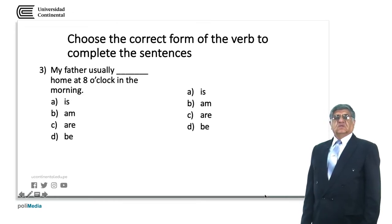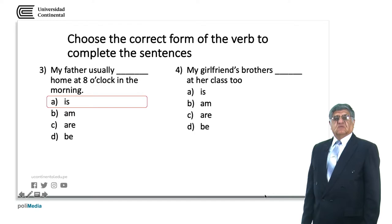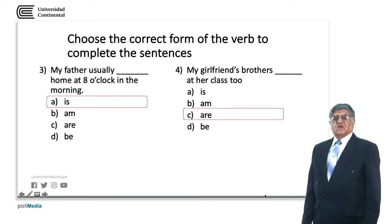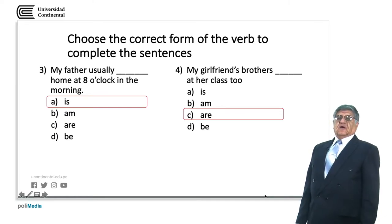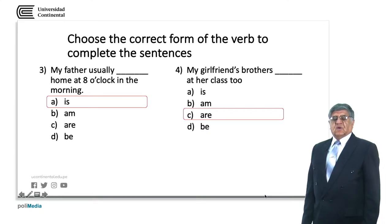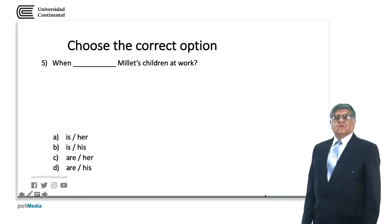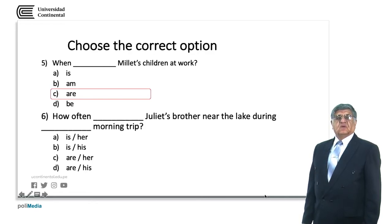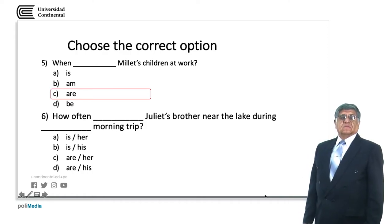'My father' is the third person singular, so we have 'is': 'My father usually is at home at eight o'clock in the morning.' 'My girlfriend's brothers' — 'brothers' is plural. The sentence refers to 'brothers' rather than 'girlfriend's', so: 'My girlfriend's brothers are at her class too.' This means the brothers are in the class of my girlfriend. When Millet's children is plural, the answer is 'are'.